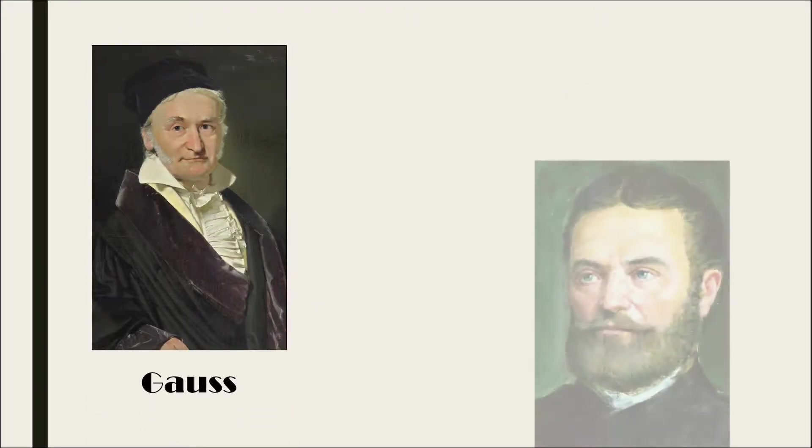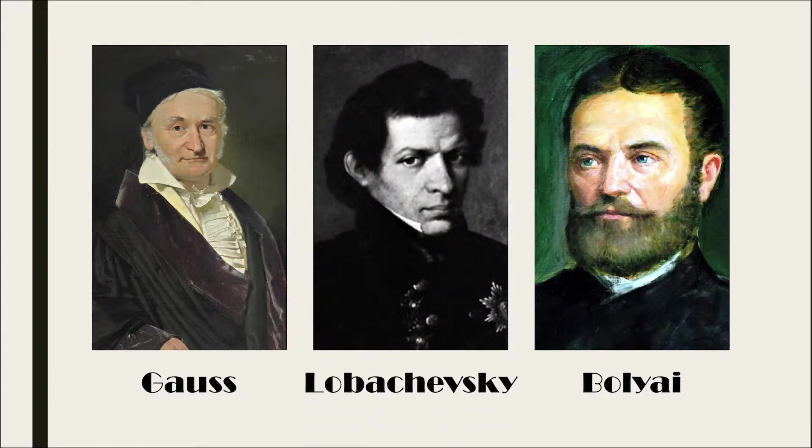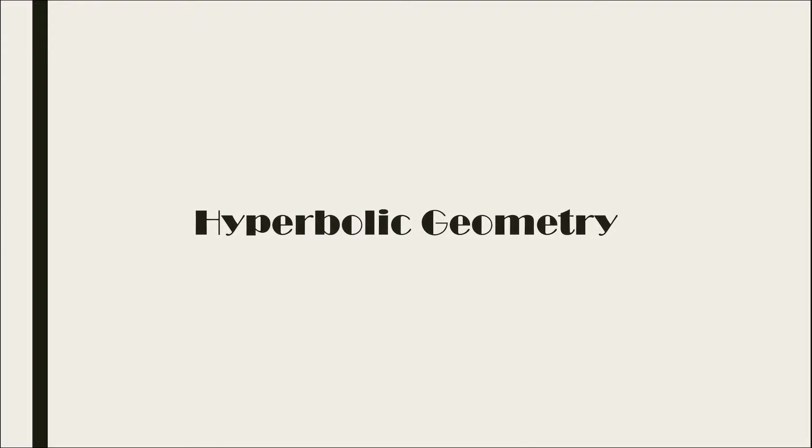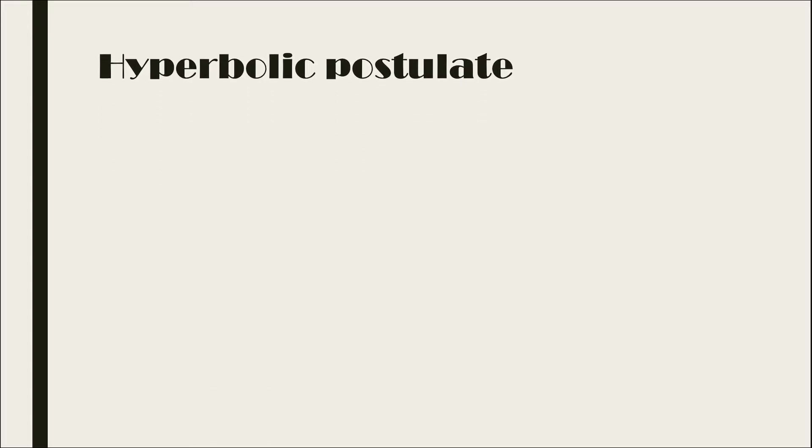The story finally ends with three men - Gauss, Bolyai, and Lobachevsky - who through trials and tribulations birthed hyperbolic geometry, a non-Euclidean geometry that strayed away from the parallel postulate, giving rise to the new hyperbolic postulate.